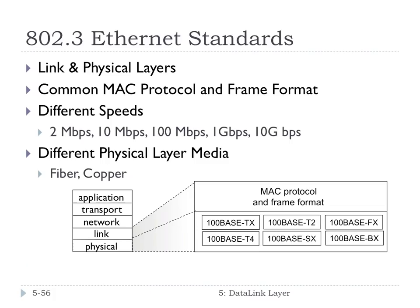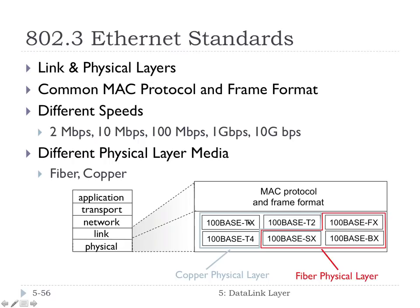There are several Ethernet standards defined in the 802.3 standard, which defines both link and physical layers. They have a common MAC protocol and common frame format, but some differences at the physical layer — Ethernet can work over fiber or over copper. There are lots of different speeds of Ethernet that have developed over the years. The ones with T in the name are copper twisted pair, and the ones with F, S, and B are for fiber.